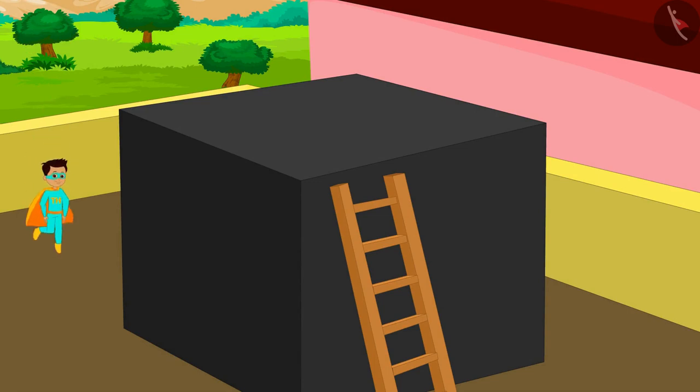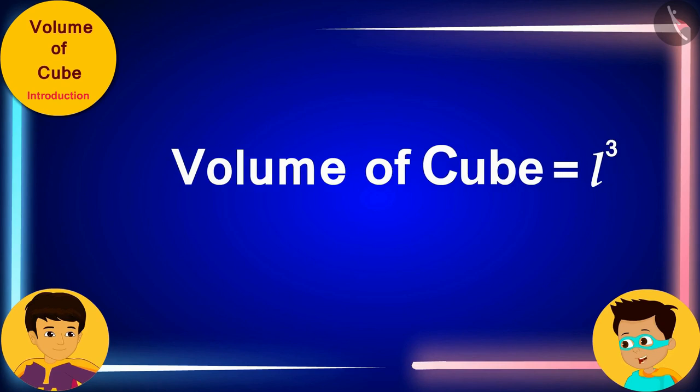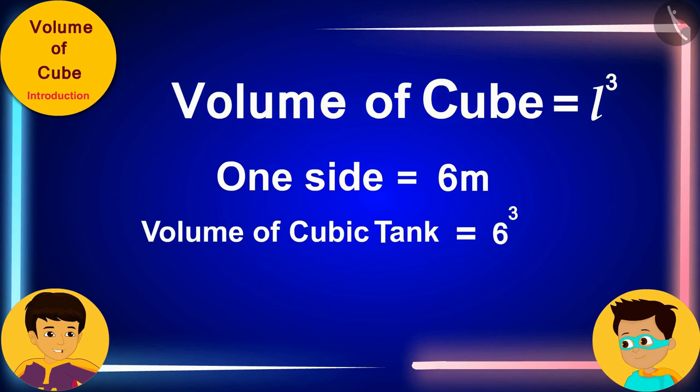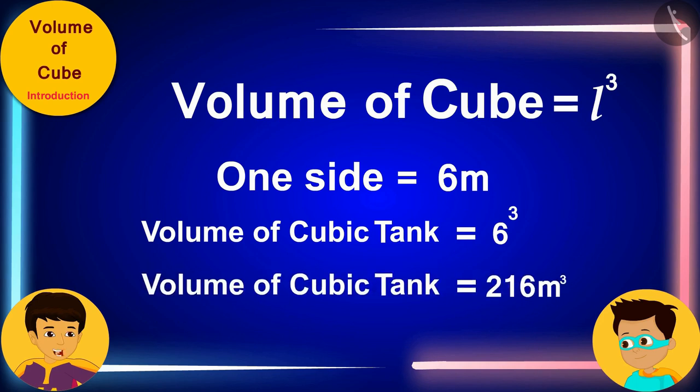Look! I will quickly measure one side of this tank. The measurement of one side of this tank is 6 meters. It means the volume of this cubic tank is 6 cube, that is 216 cubic meter.